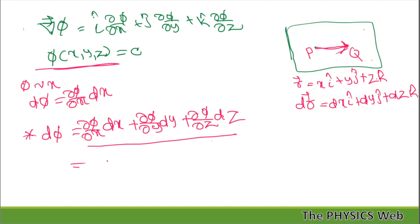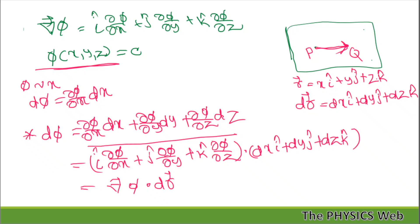Now you can see, we can express this expression as the dot product of gradient of this scalar function and the dr vector: (i cap ∂φ/∂x plus j cap ∂φ/∂y plus k cap ∂φ/∂z) dot (dx i cap plus dy j cap plus dz k cap). So this is the expression of gradient of phi dot dr.